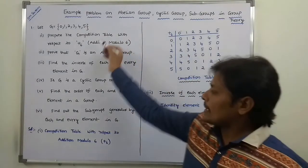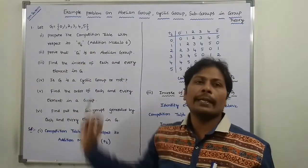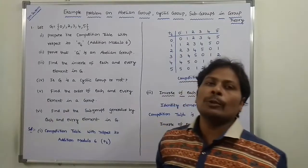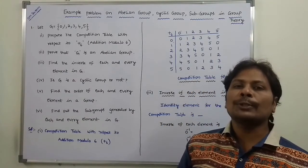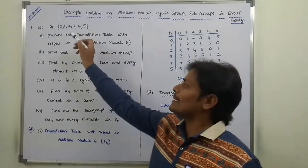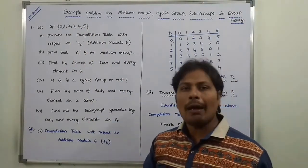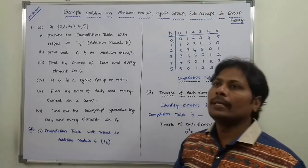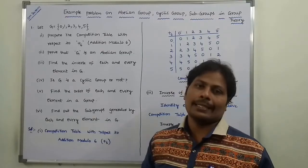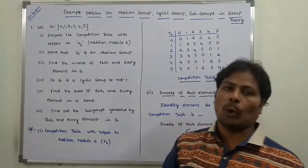So this is the given problem. There are six sub-problems. Let G be equal to the set {0, 1, 2, 3, 4, 5}. On this set G, we are applying addition modulo 6. After applying addition modulo 6, we have to check each and every sub-problem.